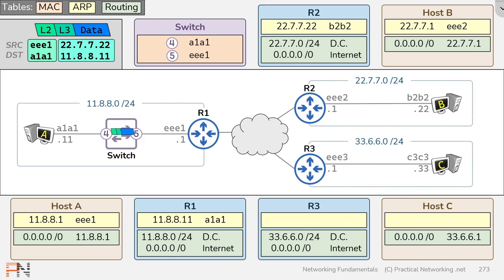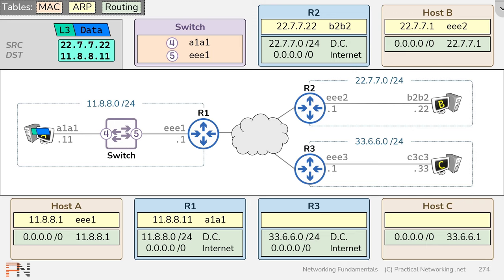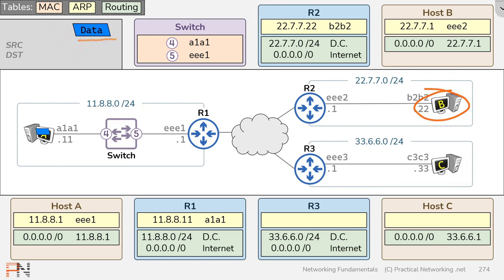Router 1 checks its routing table and determines the destination IP address matches the directly connected route, so it knows this is the final hop. Router 1 already knows the MAC address for that IP address, so it puts together a layer 2 header with source MAC of router 1 and destination MAC of host A, then puts the packet on the wire. It arrives on the switch, which has nothing new to learn and simply refreshes the entry. The switch forwards the frame out port 4 and it arrives back on host A. Host A strips the layer 2 header, strips the layer 3 header, and finally processes the response data.